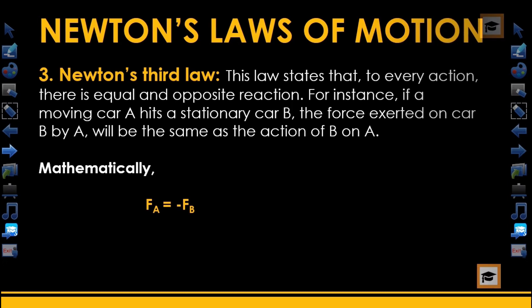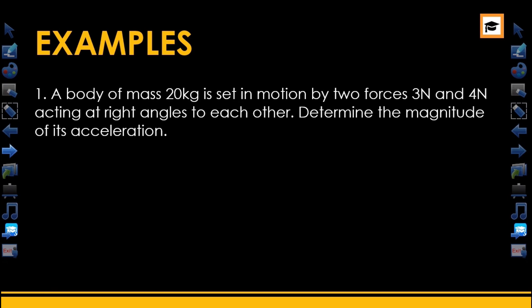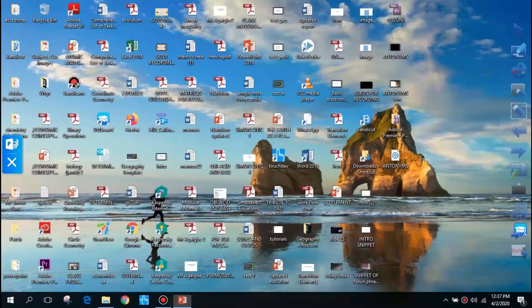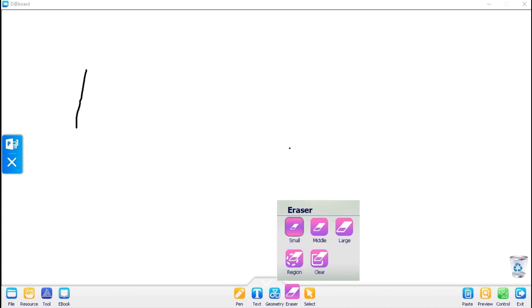Let's take a look at examples on Newton's laws of motion. Example 1: A body of mass 20kg is set in motion by two forces, 3N and 4N acting at right angles to each other. Determine the magnitude of its acceleration.